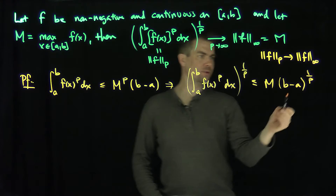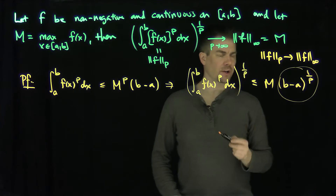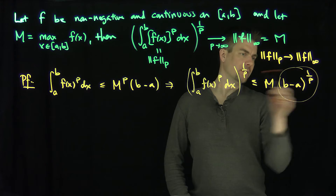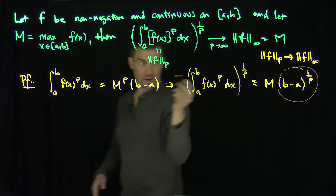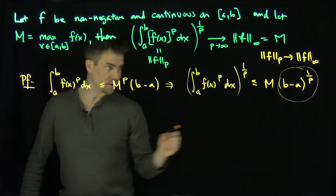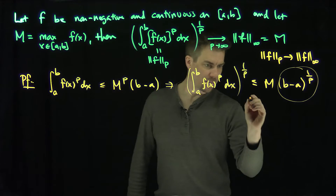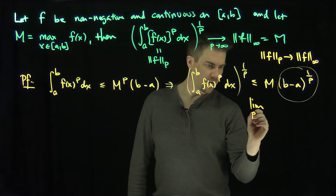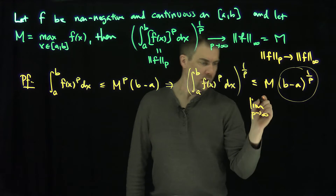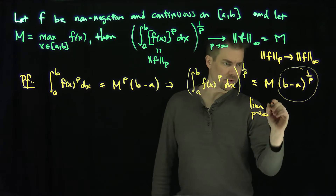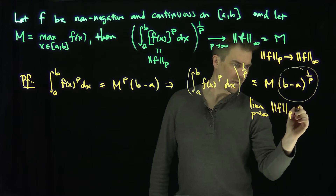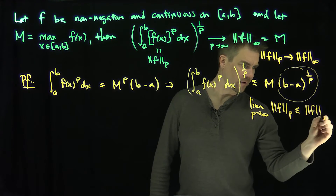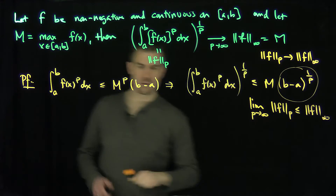Now of course as p goes to infinity, (b minus a) to the 1/p goes to 1, since (b minus a) to the power 0 is 1. So this tells me that the limit as p goes to infinity of the Lp norms is less than or equal to the L infinity norm.